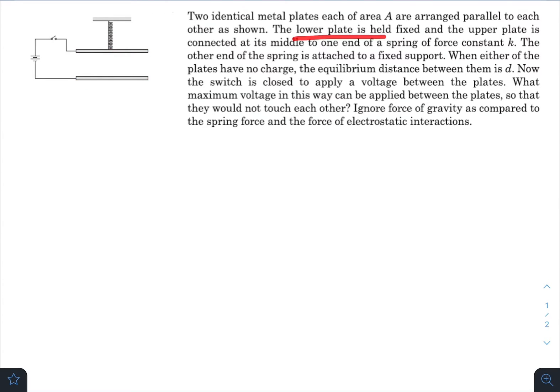The lower plate is fixed, the upper plate is connected at its middle to one end of a spring. Spring constant is K, the other end of the spring is attached to a fixed support. When either of the plates have no charge, the equilibrium distance between them is D.